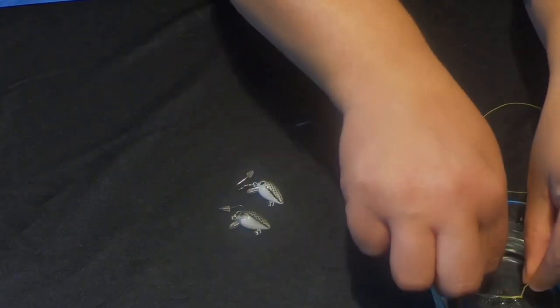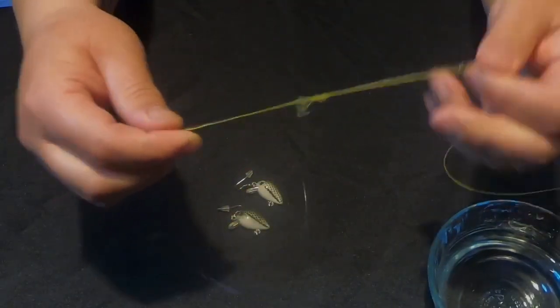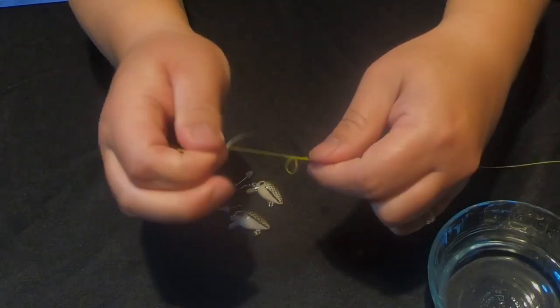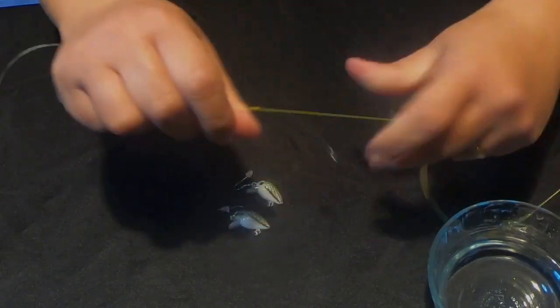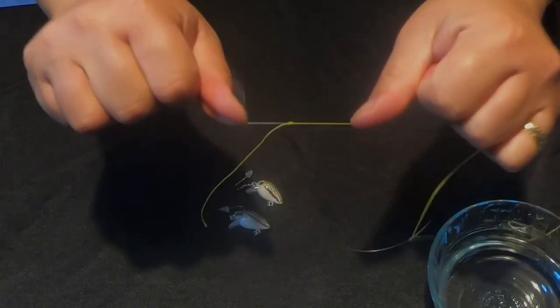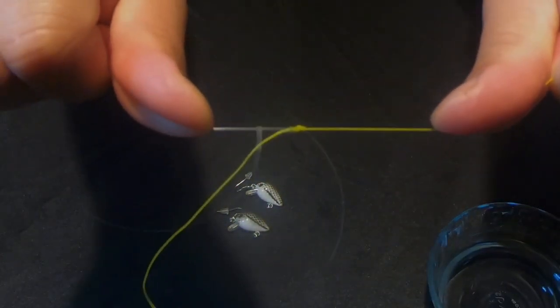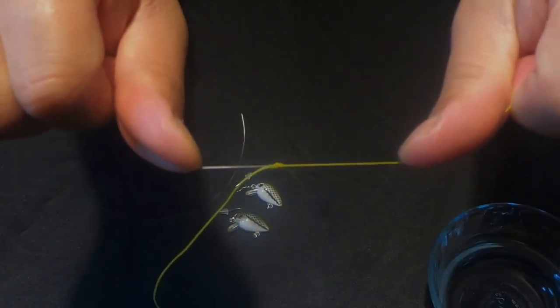I'm gonna dip it in some water. Now pull it through, pull both tag lines, and then pull both ends. And there you go, that's the knot that it forms. I've never broken that knot. I've broken knots at the hook eye, but never broken it where the braid and the leader connect.